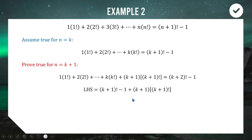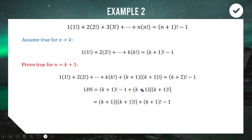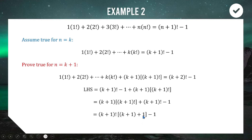We now have (k+1)! − 1 + (k+1)(k+1)!. Rearranging, we put the (k+1)! terms together and keep the −1 at the end. Factorizing the first two terms by taking out (k+1)!: the first term leaves (k+1) and the second leaves 1, giving (k+1)!·(k+1+1) − 1 = (k+1)!(k+2) − 1.